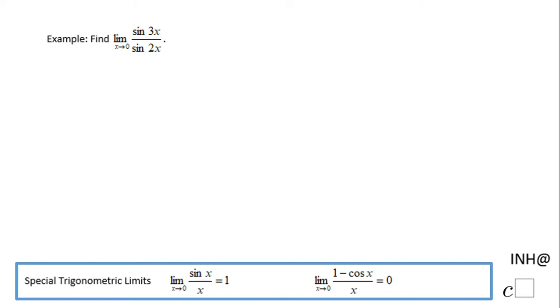Welcome or welcome back at I Need Help at C Squared. In this example we need to find this limit: limit when x approaches zero of sine of 3x over sine of 2x. If you plug zero in for this axis,